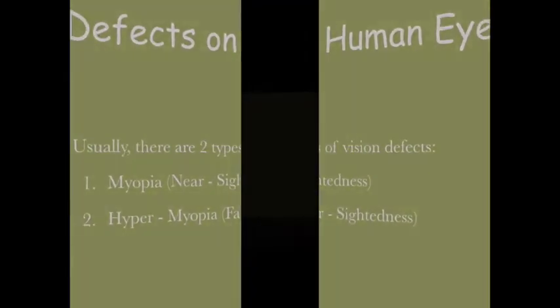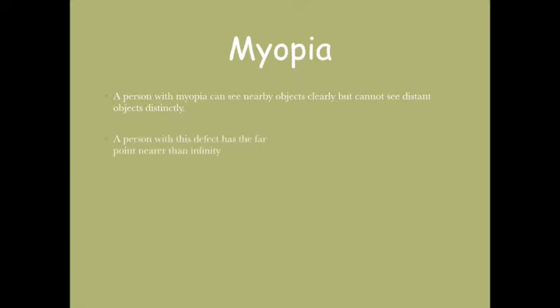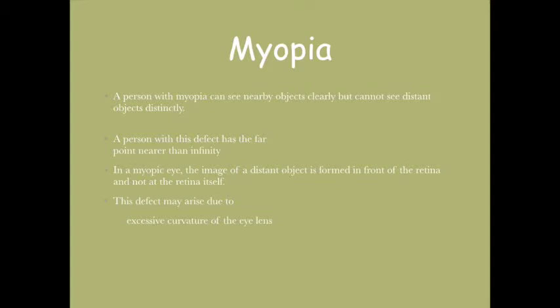A person with myopia can see near objects clearly but cannot see distant objects. A person with this defect has far point nearer than infinity. In a myopic eye, the image of a distant object is formed in front of the retina and not at the retina. This defect may arise due to excessive curvature of the eye lens or elongation of the eyeball.